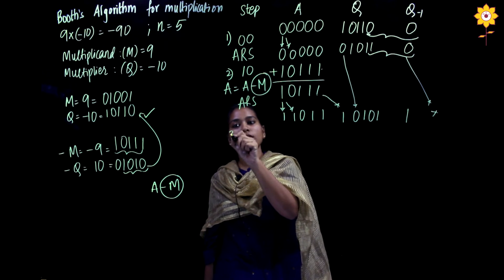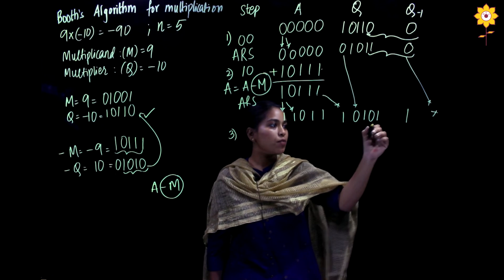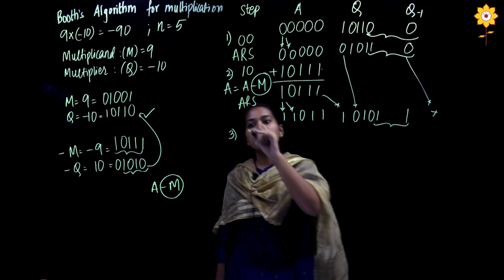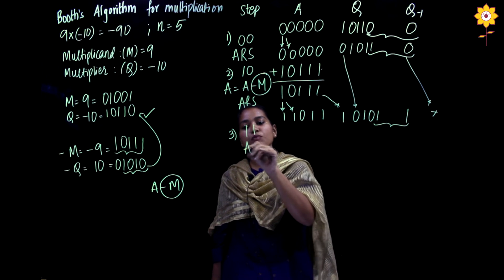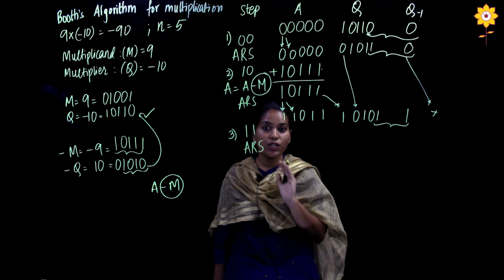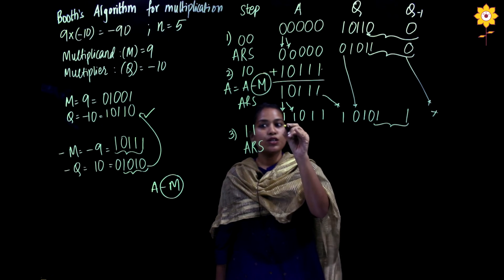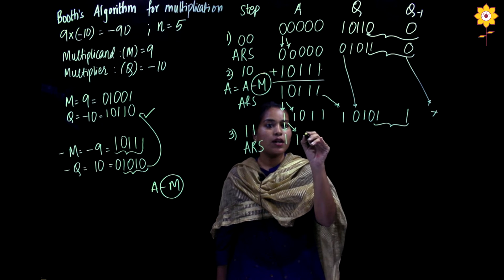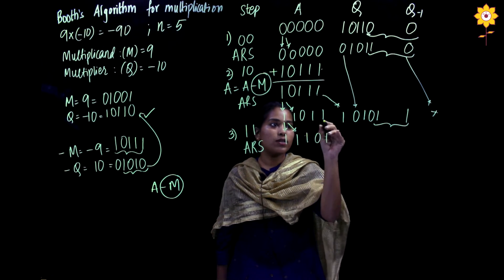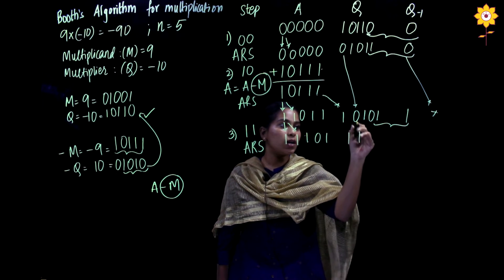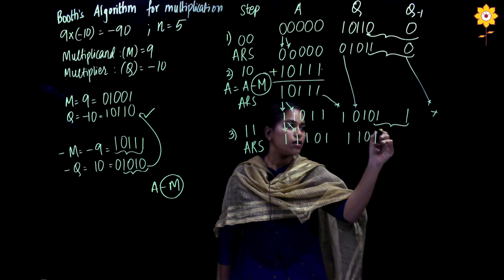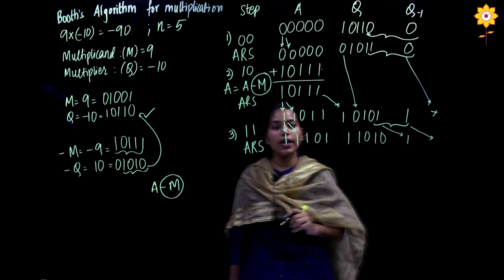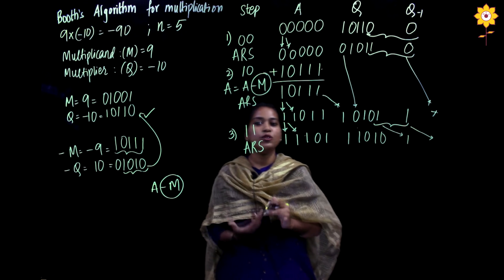Step 3: Compare the two bits — both are 1 and 1. When both are 1, we simply perform an arithmetic right shift. The MSB is replicated, bits shift right, and the trailing bit is discarded. Step 3 is done.